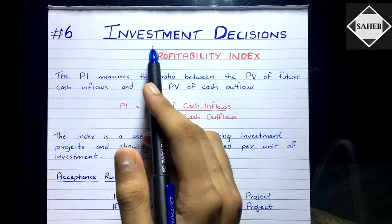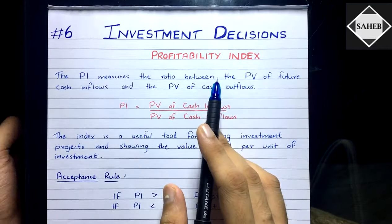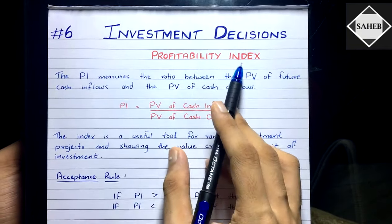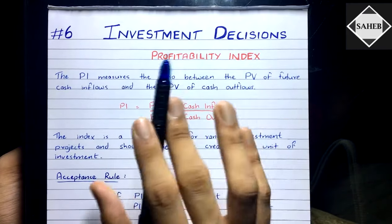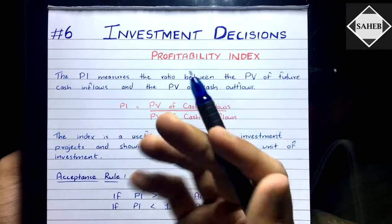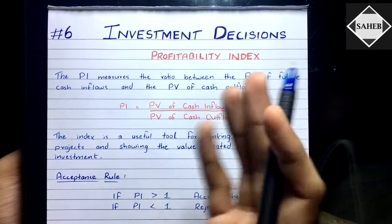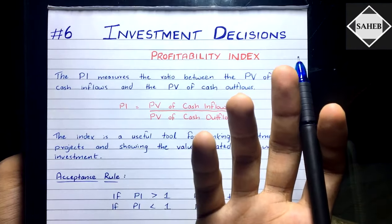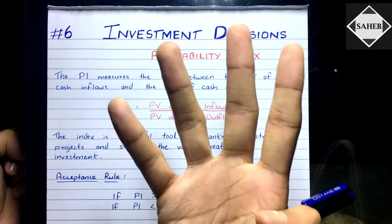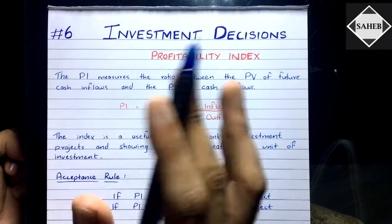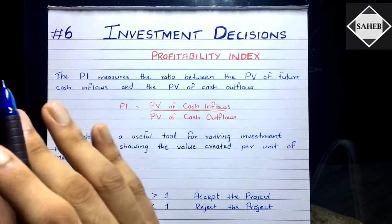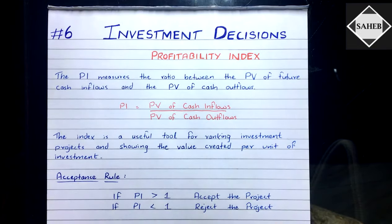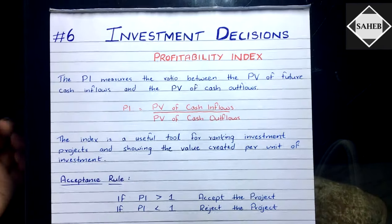Hi everyone, this is the sixth video of the Investment Decision chapter. In this video we are going to see another technique of capital budgeting — the Profitability Index. Before watching this video, please make sure you understand net present value, how to discount cash flows, present value, and time value of money. We discussed all these in the fourth video of this chapter, so please watch that first. I'll put the link in the description below.